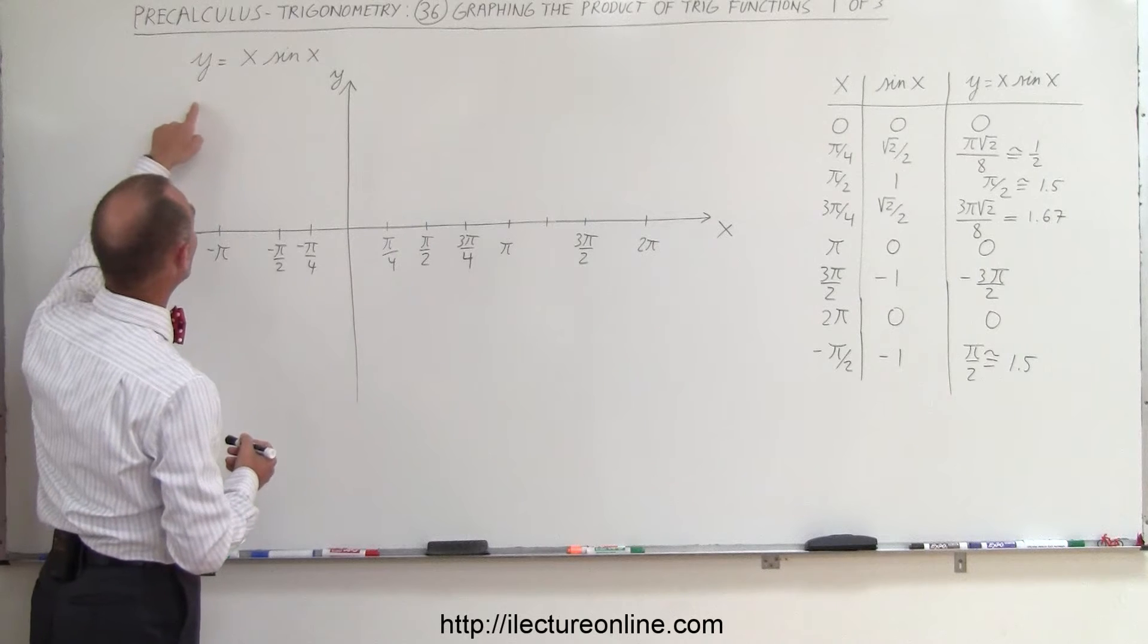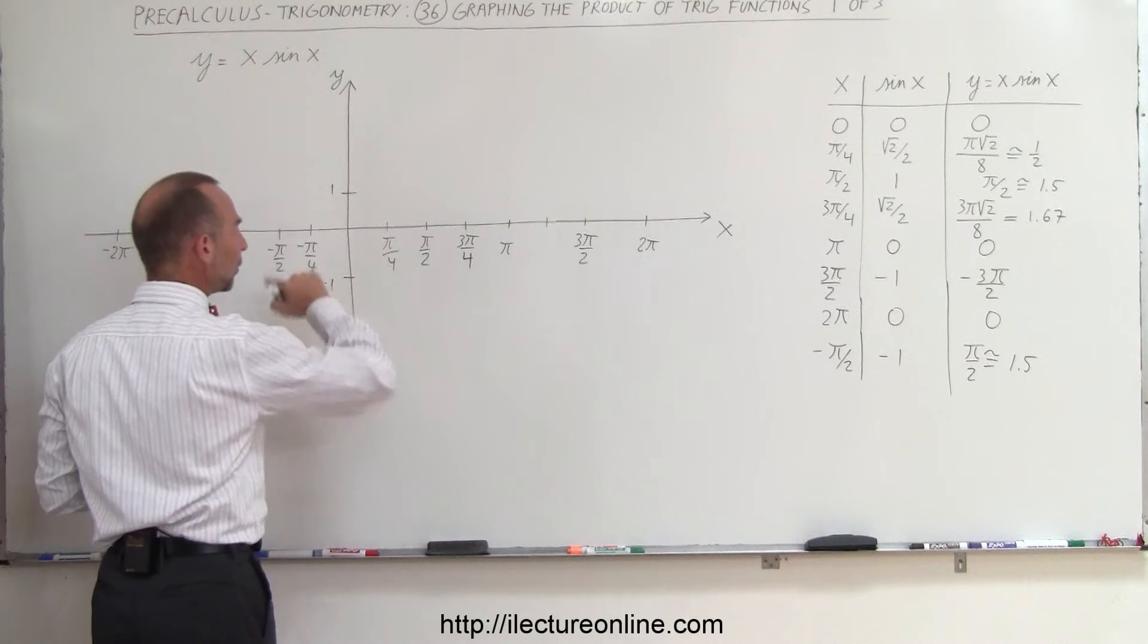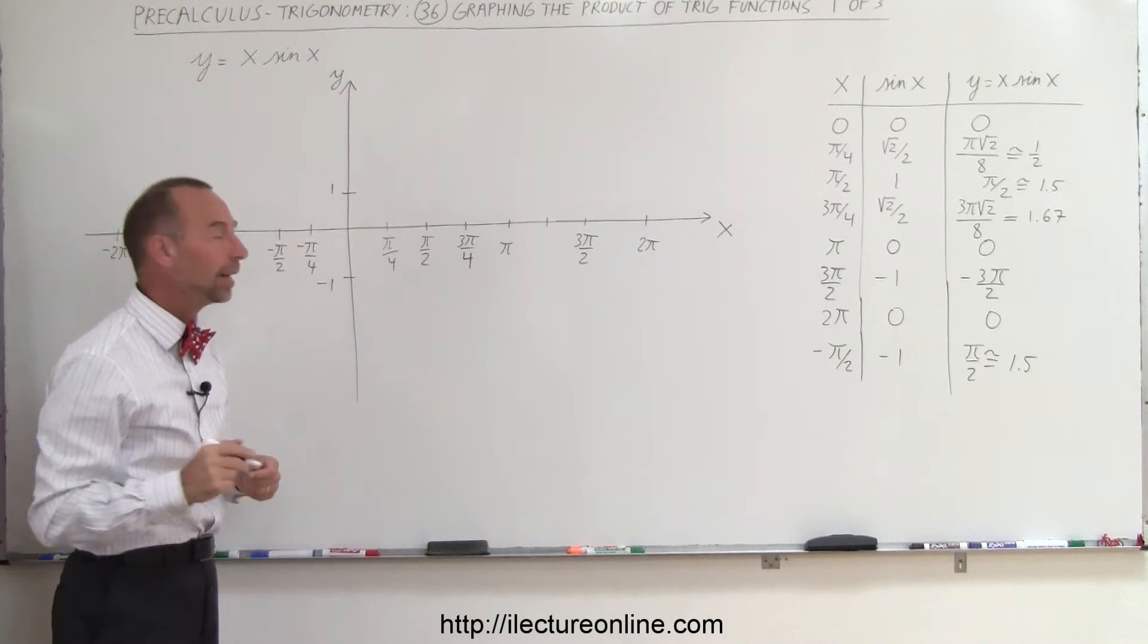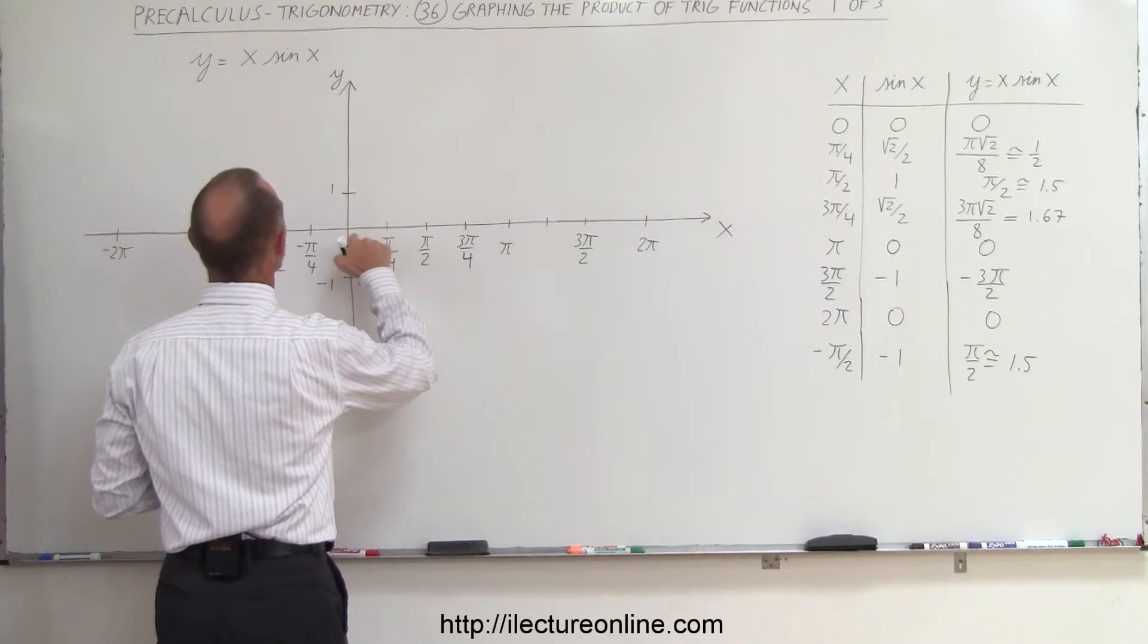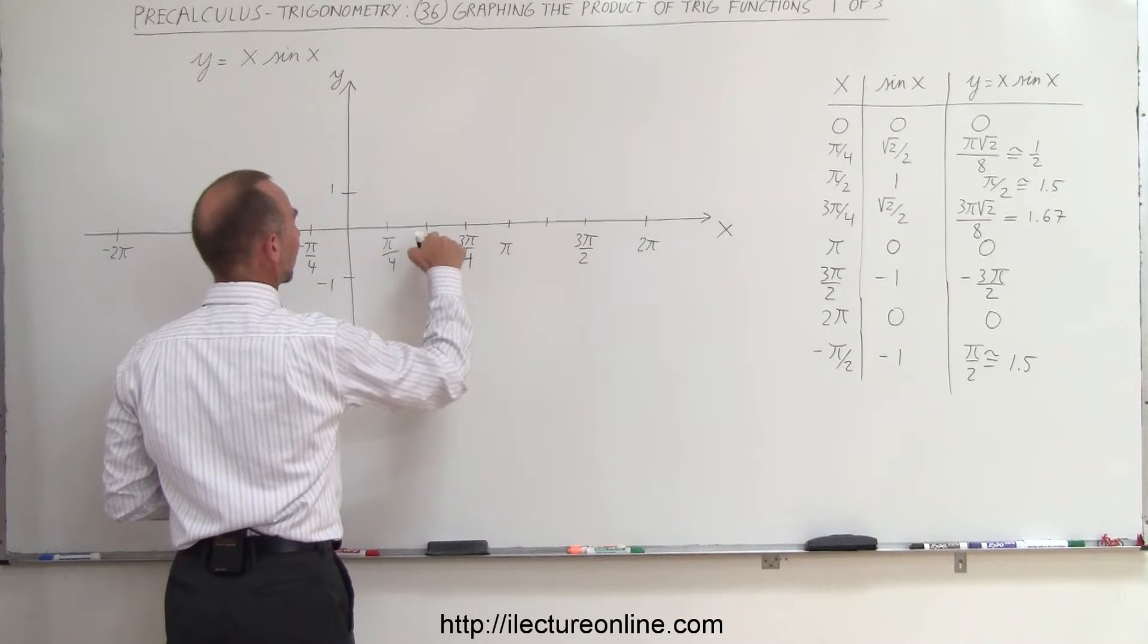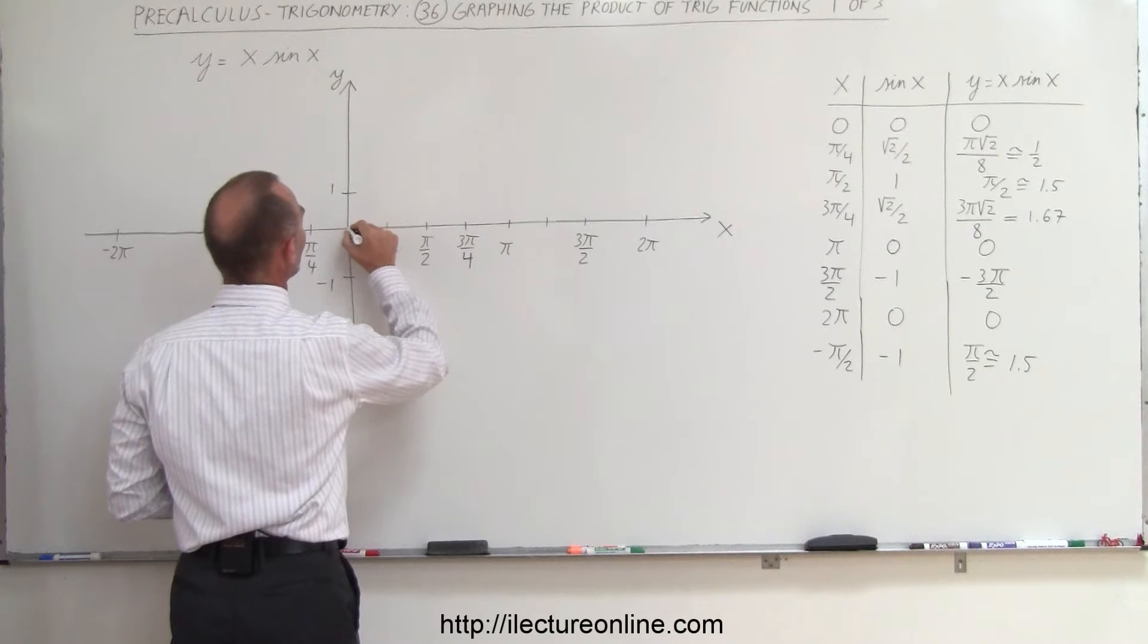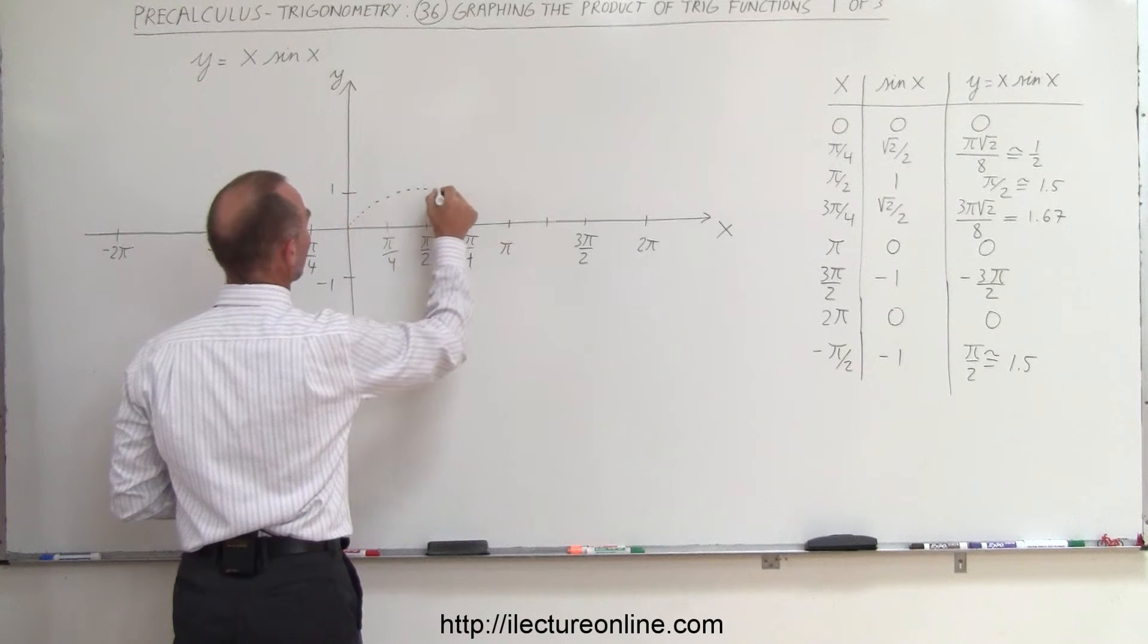But first let's graph y equals the sine of x. So let's say that this here is 1 and this here is negative 1. We know that the function bounces between 1 and negative 1. It starts at 0 when x is 0, sine of x is 0, and when we get to pi over 2, we're at maximum value, at pi we're back to 0. So the function will look something like this.